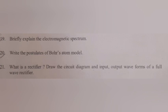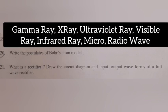Question 19: Briefly explain the electromagnetic spectrum. Answer: Gamma ray, X-ray, ultraviolet ray, visible ray, infrared ray, microwave, radio wave. Highest to lowest frequency.